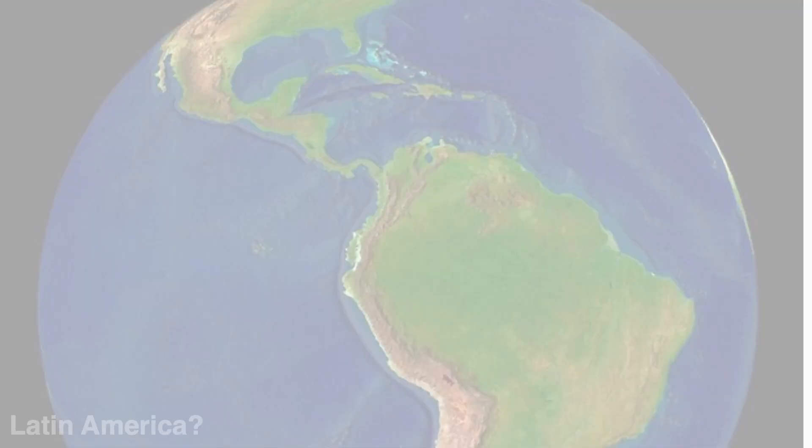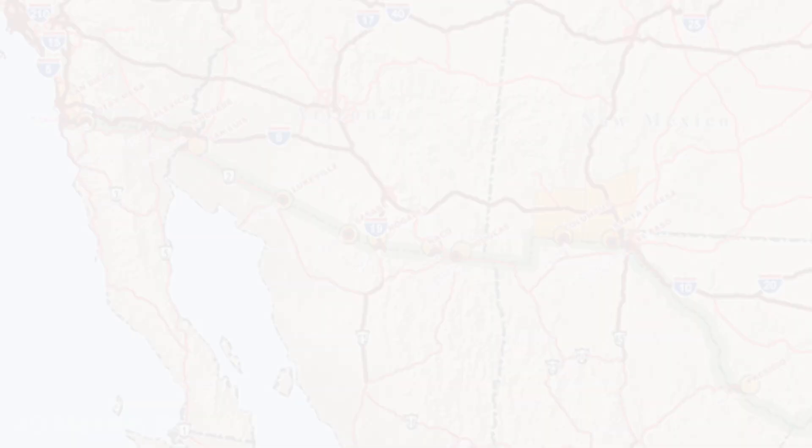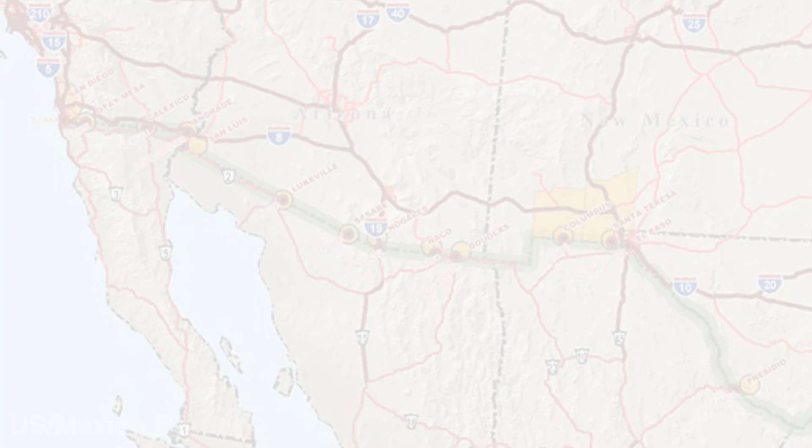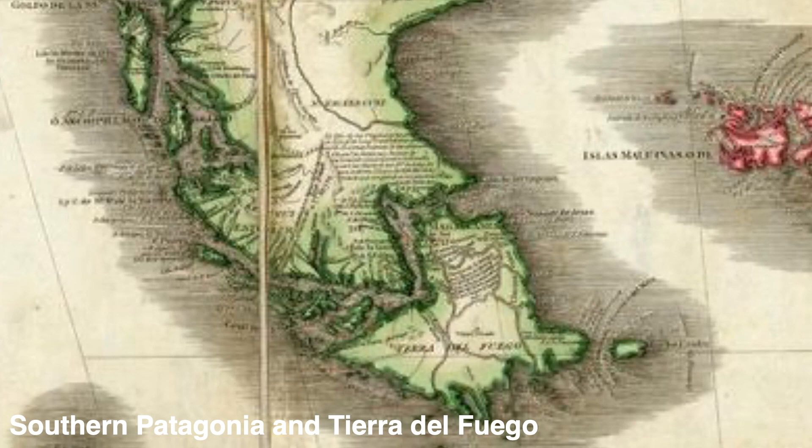One answer, then, is what we could call geographical. You may have responded that Latin America is a region defined by spatial borders. For instance, you may have said that it begins in the north at the US-Mexican border or the Rio Grande. You may have said it ends in the south, in Tierra del Fuego or Cape Horn. This is pretty good as a rough and ready rule of thumb, but it's not long before you run into problems.